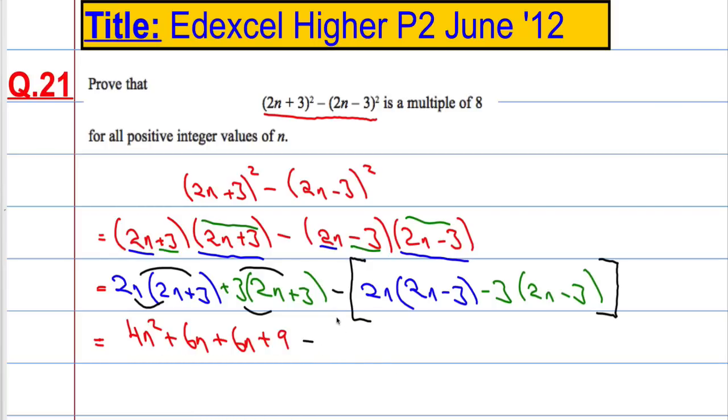So subtract. Again, keep up that big bracket for now. I'll do 2n times 2n—that's 4n². 2n times negative 3 is negative 6n. Then we're doing negative 3 times 2n and negative 3 times negative 3. Negative 3 times 2n is negative 6n. Negative 3 times negative 3 is positive 9. Then close off those brackets.